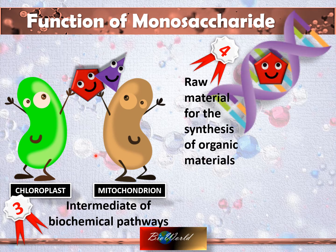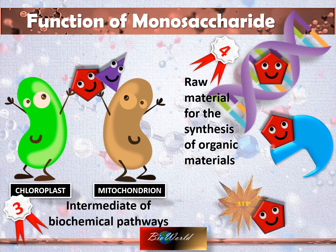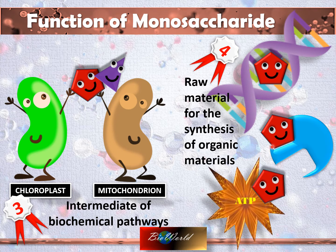A nucleotide uses a pentose sugar as the base of its structure. Enzymes also have a special site for coenzymes, where the coenzyme is synthesized from a sugar molecule. Even ATP itself — adenosine triphosphate — the adenosine part is actually a pentose sugar too. So now that you know the function of monosaccharides, let's move on to the function of disaccharides.